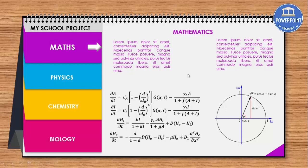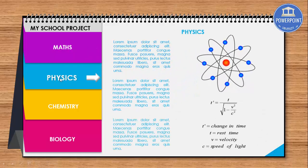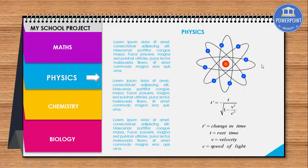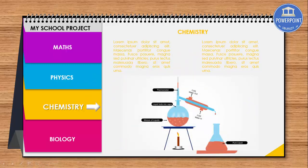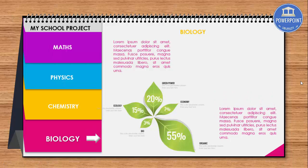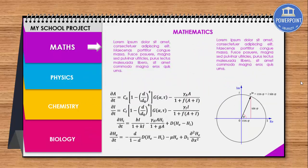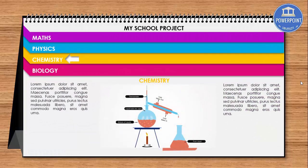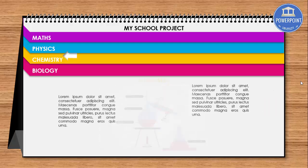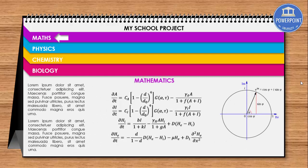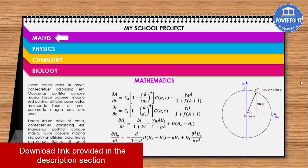When I click, the focus goes to Physics and gives you the details of Physics along with some diagrams and formulas. When I click again, the focus goes to Chemistry with its details, then Biology. I've also done a second horizontal design — whichever suits you, vertical or horizontal, you can use it. So let's start how to do this in PowerPoint.